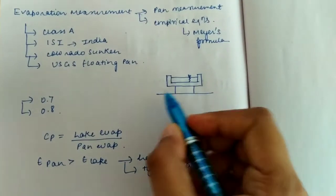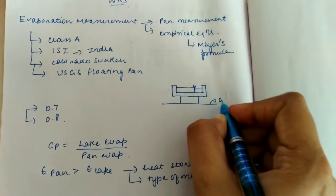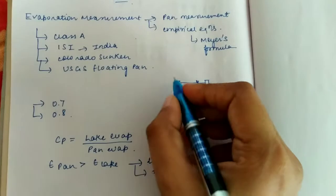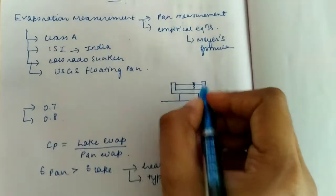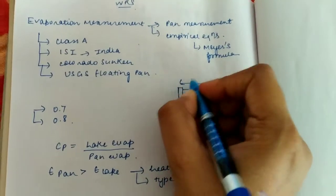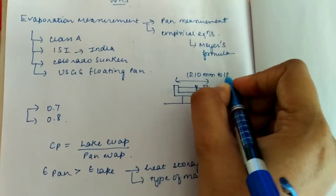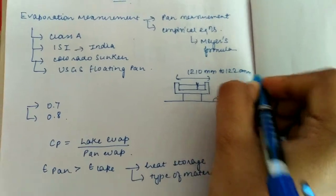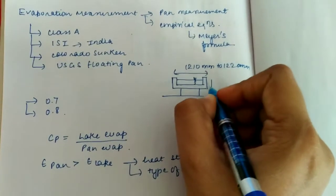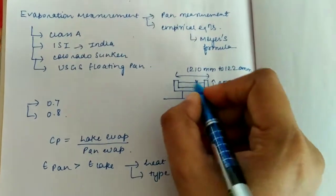It looks something like this. This is the ground level, and above the ground level we keep the pan. Dimensions are known: 1210 mm to 1220 mm diameter of the pan, and height is somewhere around 255 mm.